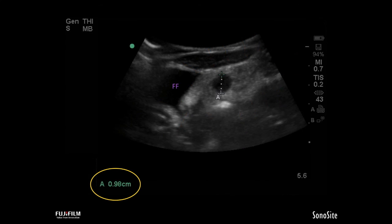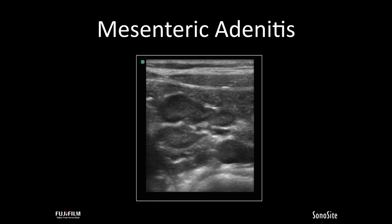One other thing that can present with right lower quadrant abdominal pain in some children is mesenteric adenitis. Those lymph nodes look a little bit like beans and may exist in the right lower quadrant as a result of some infectious etiology. In addition, these children may have that same appearance of dilated bowel with hyperechoic dots inside, suggesting the beginning of gastroenteritis.